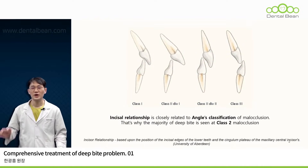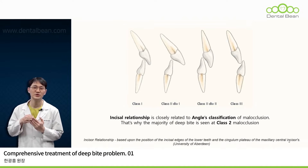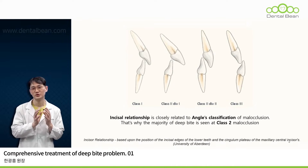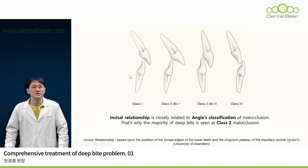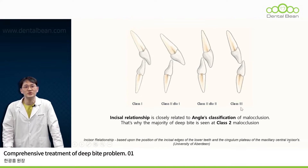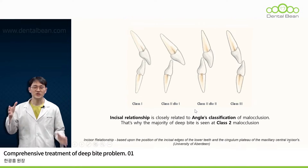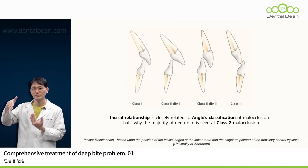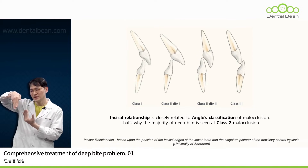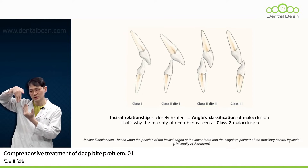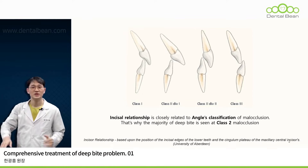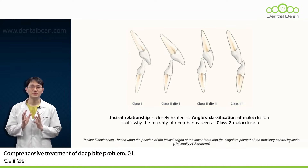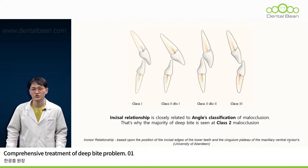Although a deep bite primarily concerns the relationship of the maxillary and mandibular incisors, these incisors are influenced by the relationship of the canines and posterior teeth situated behind them. Thus, compared to class 1 or 3, class 2 naturally presents an increased overjet as the entire maxillary arch is positioned anterior to the mandibular arch. With an elevated overjet, the mandibular incisors surge upward while the maxillary incisors descend, greatly escalating the potential for a deep bite. This explains why the majority of deep bite cases are much more common in class 2 malocclusions.